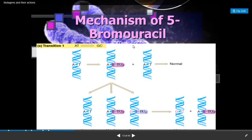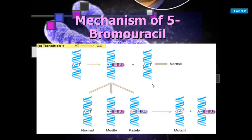The mechanism of 5-bromo-uracil involves a transition process: adenine-thymine to guanine-cytosine. In the DNA molecule, adenine normally pairs with thymine, but mutation occurs where adenine pairs with 5-BU. When replication takes place: adenine-thymine, then adenine–5-BU and guanine–5-BU. Those DNA molecules are mutant because the sequence is changed; the other is the normal or wild-type DNA molecule.